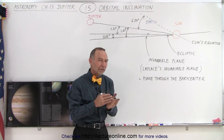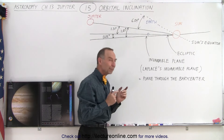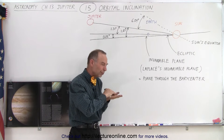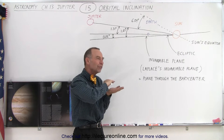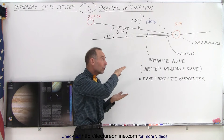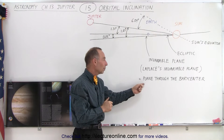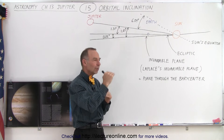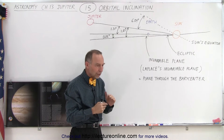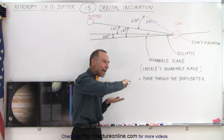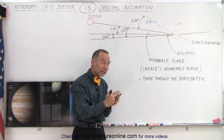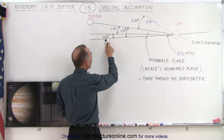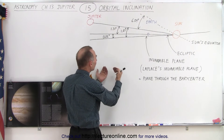Then there's a second reference plane which is called the invariable plane — also called Laplace's invariable plane. That plane is drawn essentially to the center of mass of the planets going around the Sun. In other words, it's the plane through the barycenter. Because all the planets are in various locations, some above and some below the ecliptic, at any moment in time the angle through the barycenter of all the planets put together is always in the very same place — that's why it's called the invariable plane. That plane happens to be 0.32 degrees, almost a third of a degree, below the ecliptic.